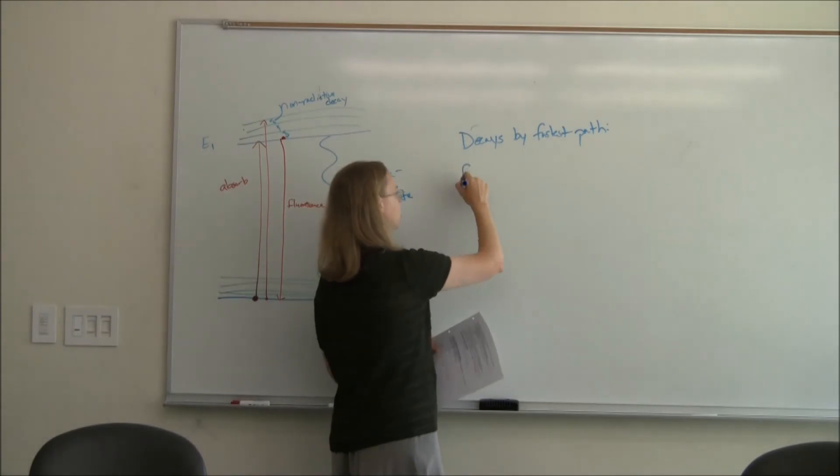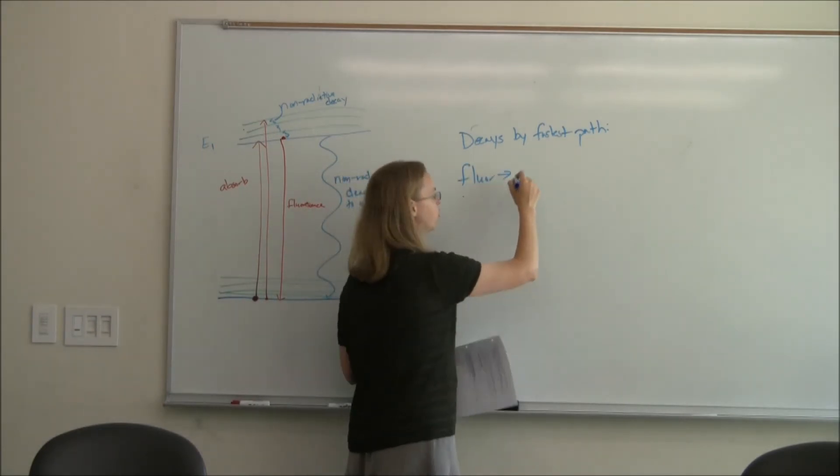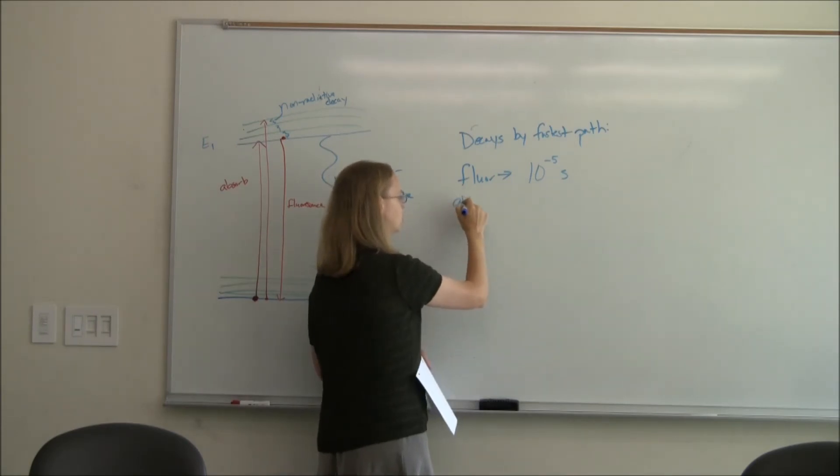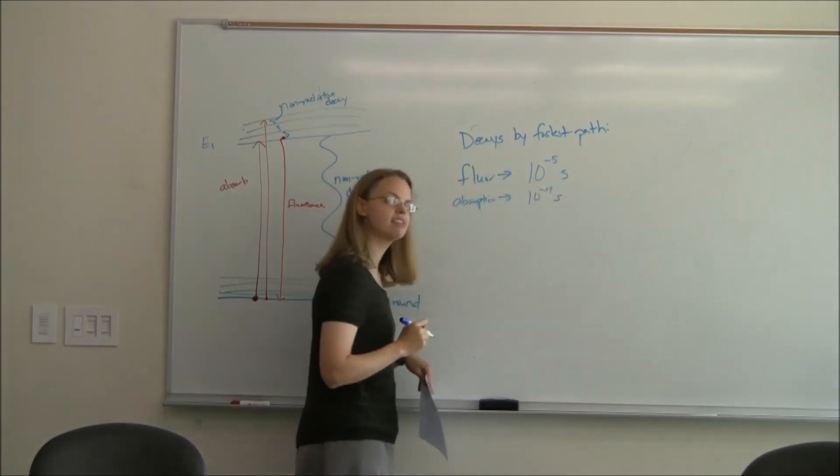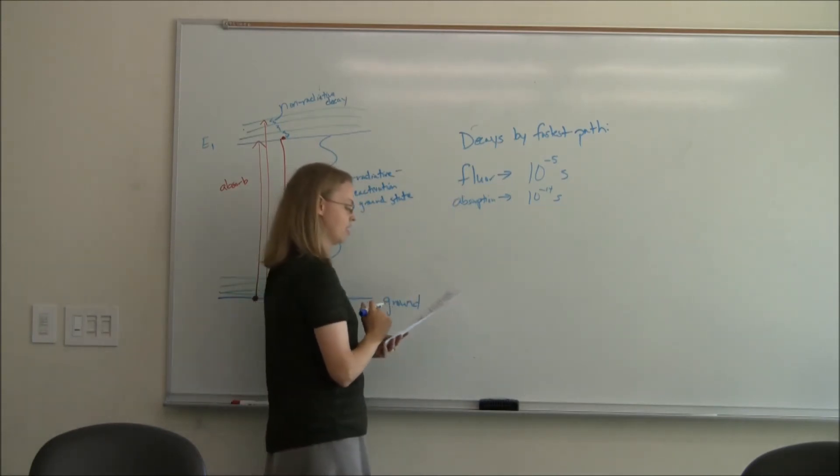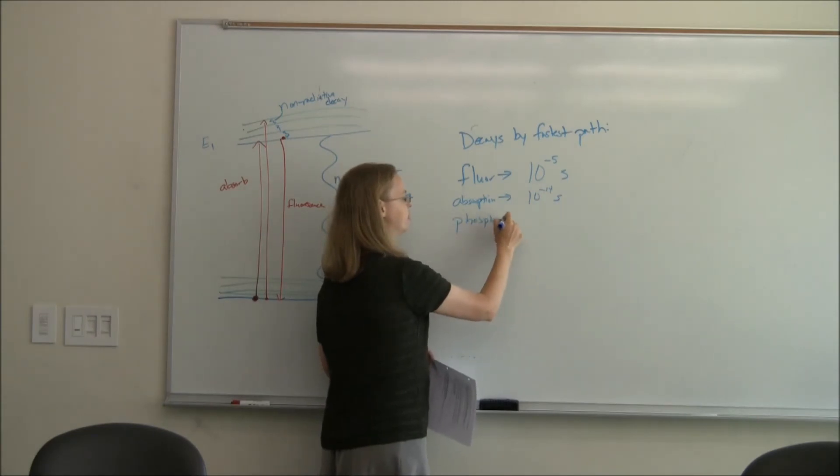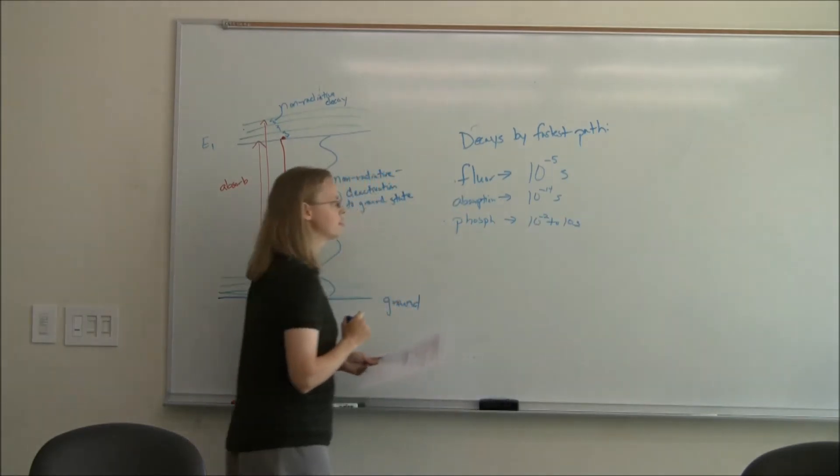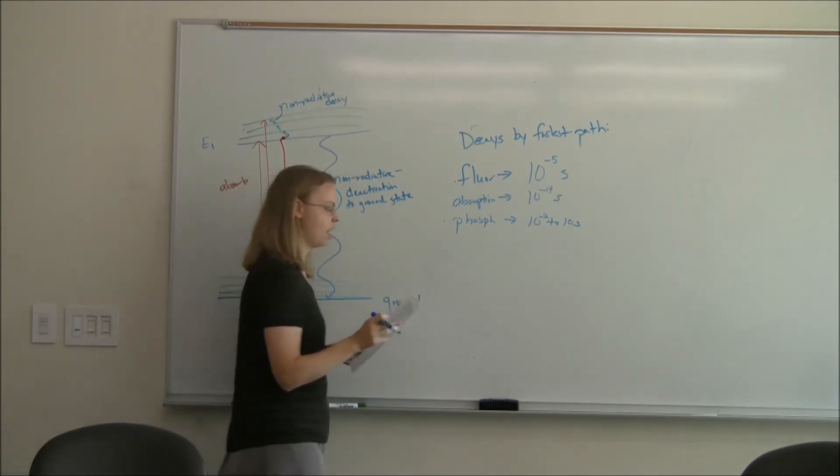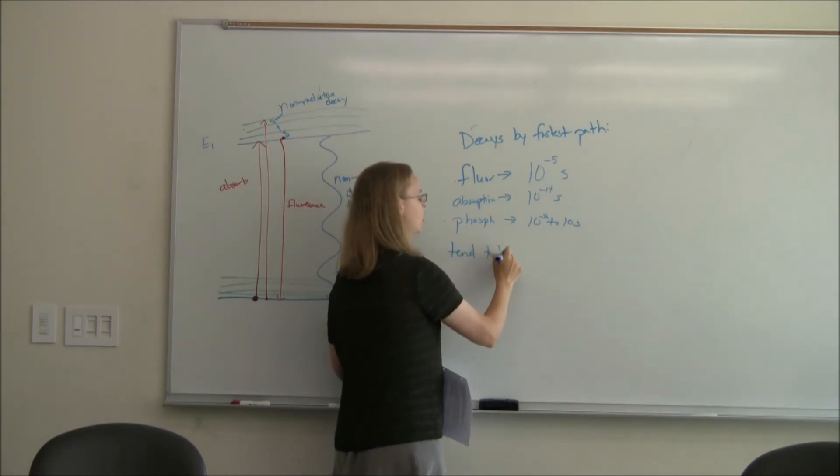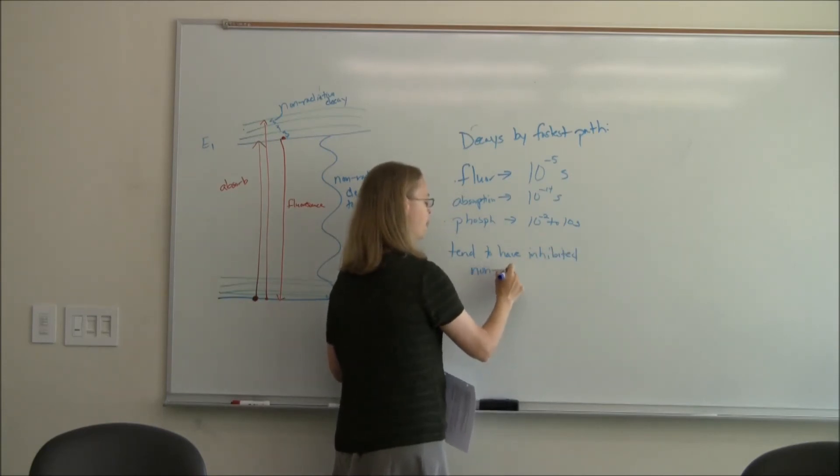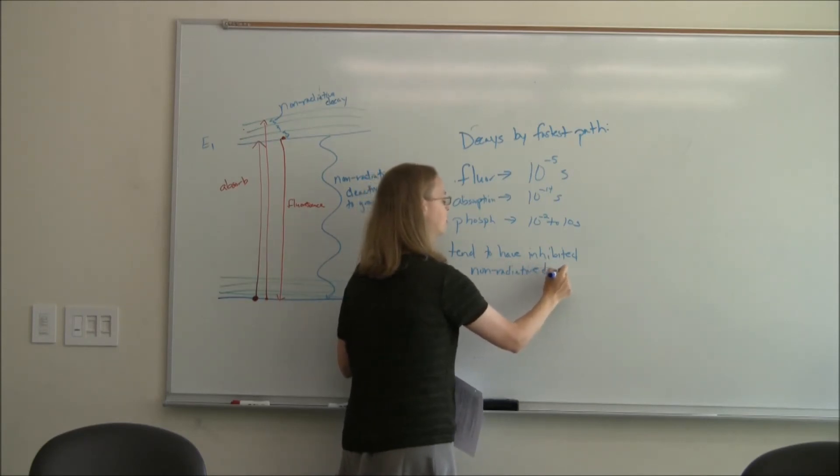It decays by the fastest. Fluorescence is usually somewhere on the order of 10 to the minus 5 seconds. Just for reference, absorption to go up there is like on the order of 10 to the minus 15 seconds. So that shows you how fast that is. Turns out phosphorescence is really slow. It can be like all the way up to like 10 seconds. We need molecules that fluoresce to have somehow inhibited this non-radiative decay.